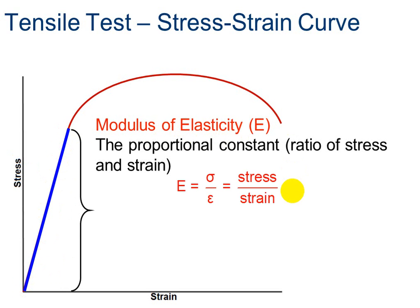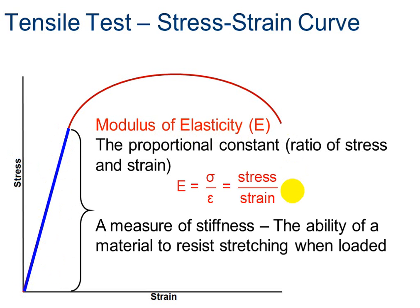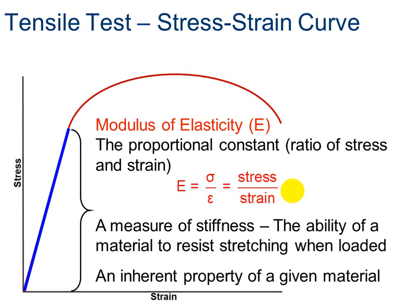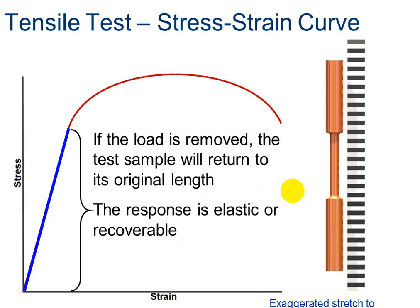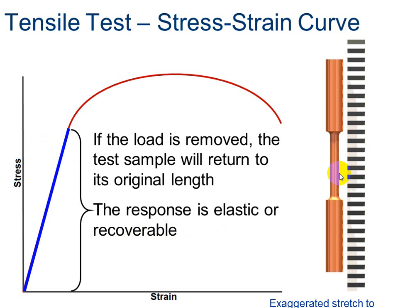Here's the formula: stress over strain equals modulus of elasticity. Modulus of elasticity is a measure of stiffness — it's the ability for a material to resist stretching when loaded. A higher modulus of elasticity means it's more resistant to stretching. It's an inherent property of any given material. Notice that if the load is removed, the test sample will return to its original length — this is elastic or recoverable, and would be non-destructive testing.